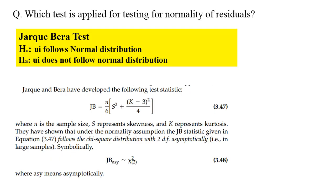Which test is applied for testing normality of residuals? The Jarque-Bera test. The null hypothesis is that u_i follows a normal distribution; the alternate hypothesis is that u_i does not follow normal distribution. The JB test statistic formula is (n/6) × [S² + (K − 3)² / 4], where S represents skewness and K represents kurtosis. This test statistic follows a chi-square distribution with two degrees of freedom.